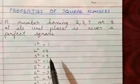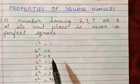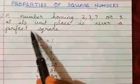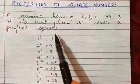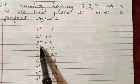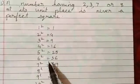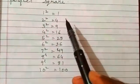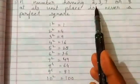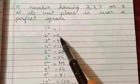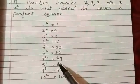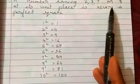Now, properties of square numbers. All perfect square numbers have specific properties. First: a number having 2, 3, 7, or 8 at its unit place is never a perfect square. Consider: 1²=1, 2²=4, 3²=9, 4²=16, and so on. In these perfect squares, never do 2, 3, 7, or 8 appear in the unit place. That means a perfect square will always have its unit digit as something other than 2, 3, 7, or 8.